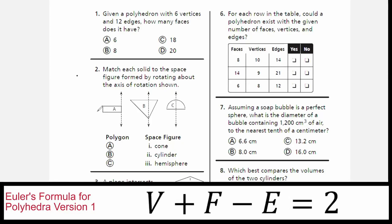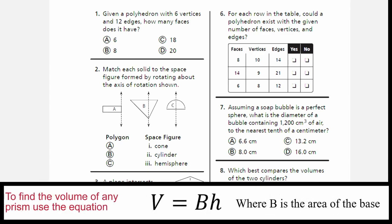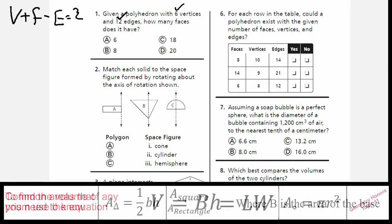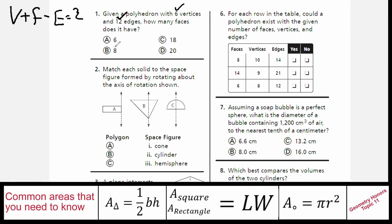Number one, we're looking at Euler's polyhedra formula, which tells us the number of vertices plus the number of faces minus the number of edges must equal two. We can see here that vertices plus faces minus edges equals two, and we're given two of these three variables to replace, so we can go ahead and do that.